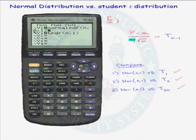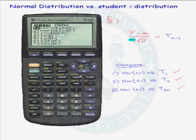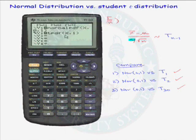We want to compare it to a t distribution, so we use the tPDF function. tPDF is found in the same place as normalPDF — under 2nd VARS, here it's number 4. We graph it for x values from negative 6 to 6 using 1 degree of freedom.